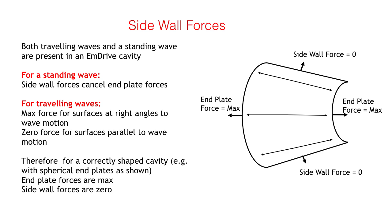However, for a traveling wave, the maximum force is achieved when the wave front is reflected at right angles to the end plate. In a well-designed cavity, the traveling waves are moving parallel to the cavity wall at the wall surface, and the force is therefore zero. So the thrust is due only to the end plate forces.